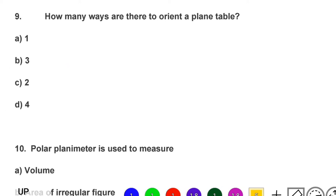Next question: how many ways are there to orient a plane table — option A: 1, option B: 3, option C: 2, option D: 4. The correct answer is option C, 2.